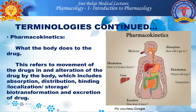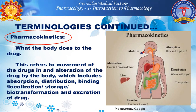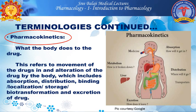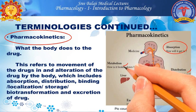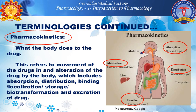Coming to the next important topic: pharmacokinetics. What is pharmacokinetics? It is about what the body does to the drug. Pharmacokinetics refers to the movement of a drug in and alteration of the drug by the body, which includes absorption, distribution, binding, localization, storage, biotransformation, and excretion of a drug.